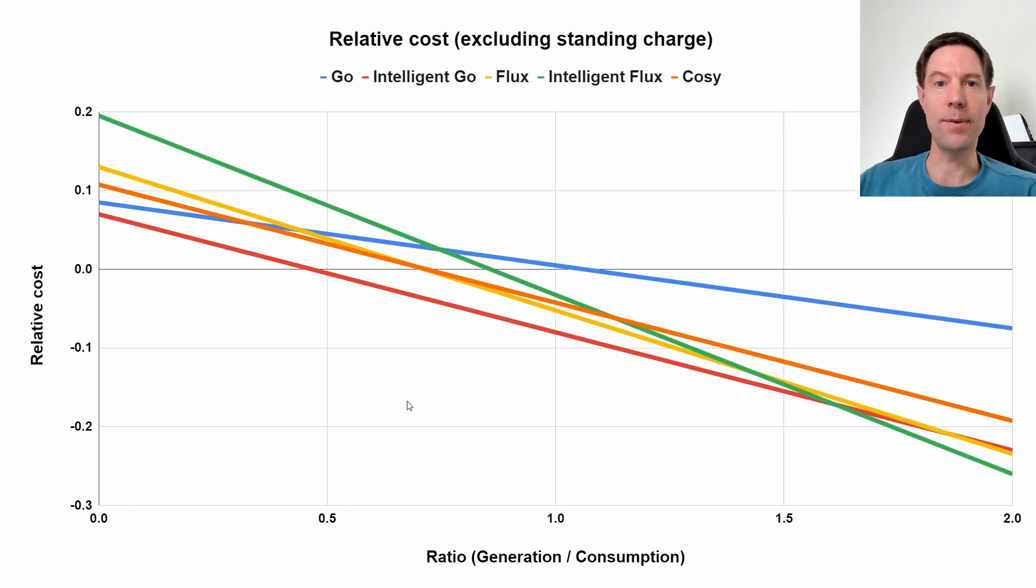If you had a really big array which generated way more than you needed, let's say you generated 750 kilowatt hours in a month and you only consumed 500 kilowatt hours, that would be a generation to consumption ratio of 1.5. And you would read up the chart here on this value of 1.5 and once again you would hit Intelligent Go first. So that would suggest that Intelligent Go is still the best tariff for you, followed very rapidly by both Intelligent Flux and Flux which are almost indistinguishable in this particular example, then Cozy and then regular Go. If however you had a very high EV usage and you used let's say a thousand kilowatt hours per month and you generated 500, then your ratio would be 0.5. We would read up from this value of 0.5 and we would hit Intelligent Go once more.